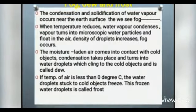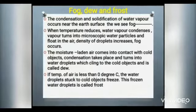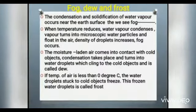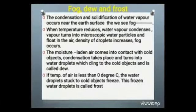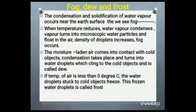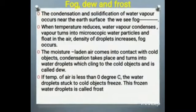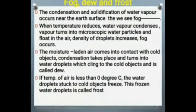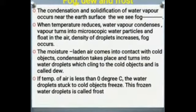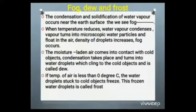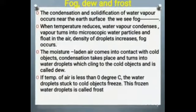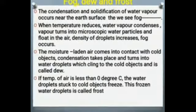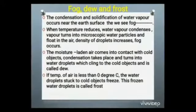As the temperature of the layers of air near the surface of the earth reduces, water vapor condenses. In this process, vapor turns into microscopic water particles and floats in the air. When the density of these droplets in the air increases, fog occurs.